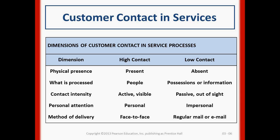Some restaurants have put a glass window between where customers eat and where food is made, so customers can actually see how the food is prepared — that is an active and visible example. Versus a low-contact situation, which is passive and out of sight — you don't really want the customer to see what you're doing.